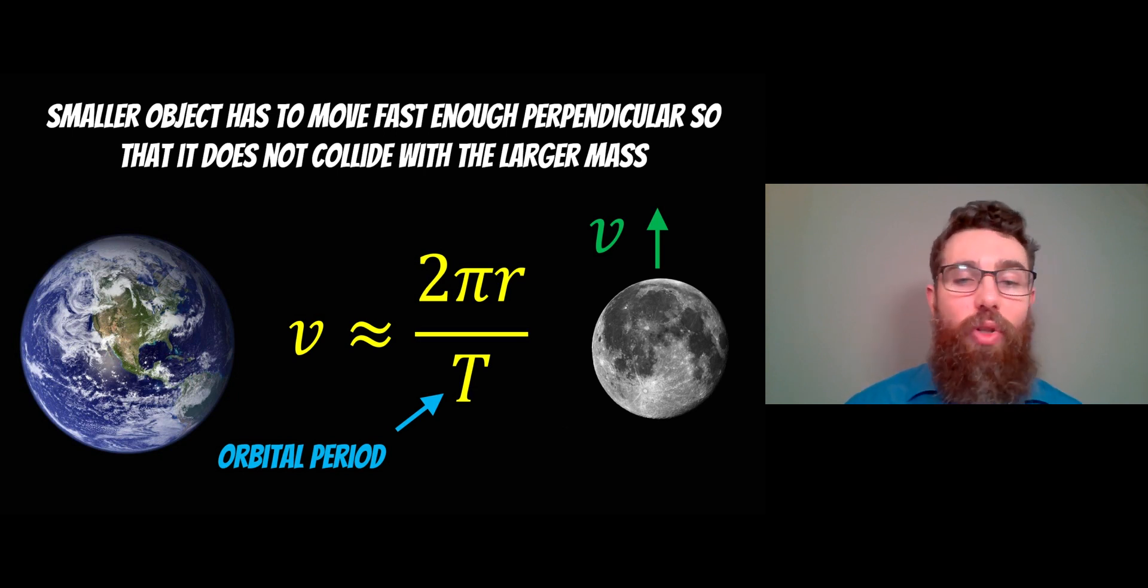Now, the orbit isn't circular, so it's a bit of approximation. That velocity can be approximated to about 2πr/T, the distance separating the two objects divided by the orbital period. We can calculate or measure the orbital period fairly easily.